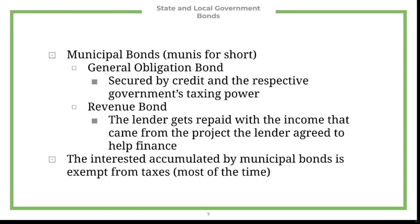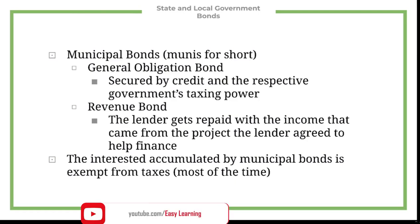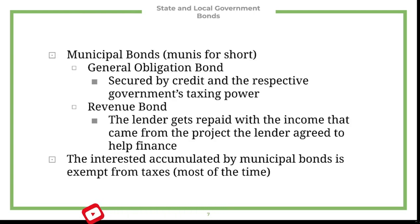The next kind is called a municipal bond — these are bonds that state and local governments issue, known as munis for short. There are two different kinds: the first is called a general obligation bond, and these bonds are backed by credit and the respective government's taxing power.